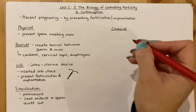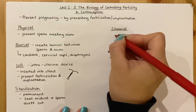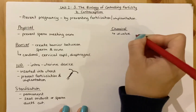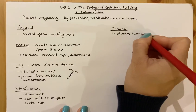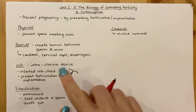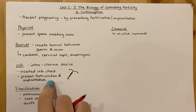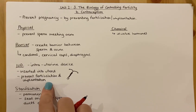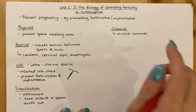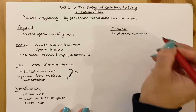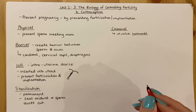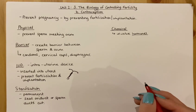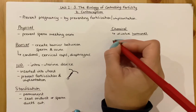The second type of contraception is chemical, and these involve hormones. Some IUDs do have hormones on them, but for the purpose of the Higher Human course, IUDs are referred to as physical. All the remaining methods involve hormones — they may not be the real versions but synthetic versions, though they're still hormones nonetheless.